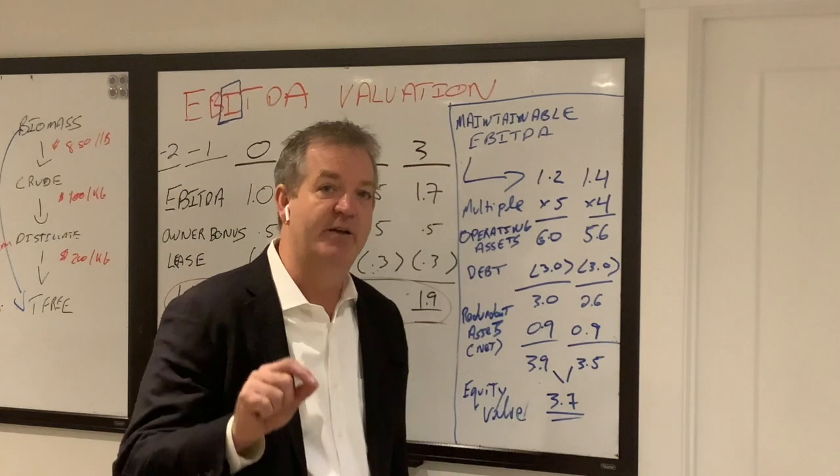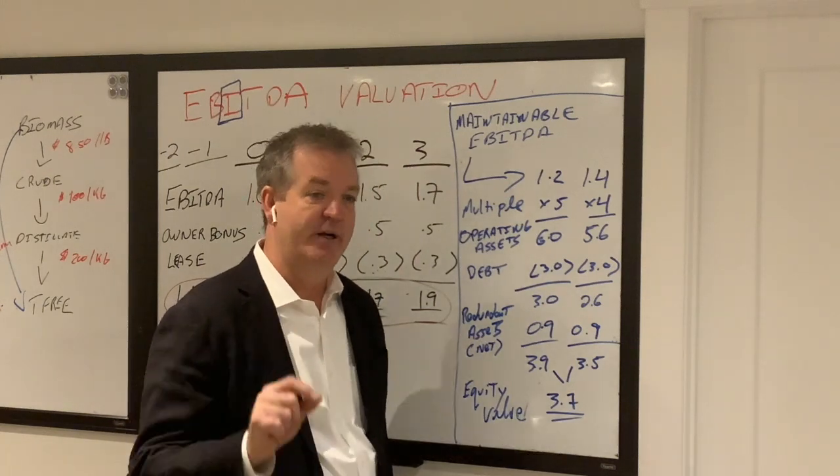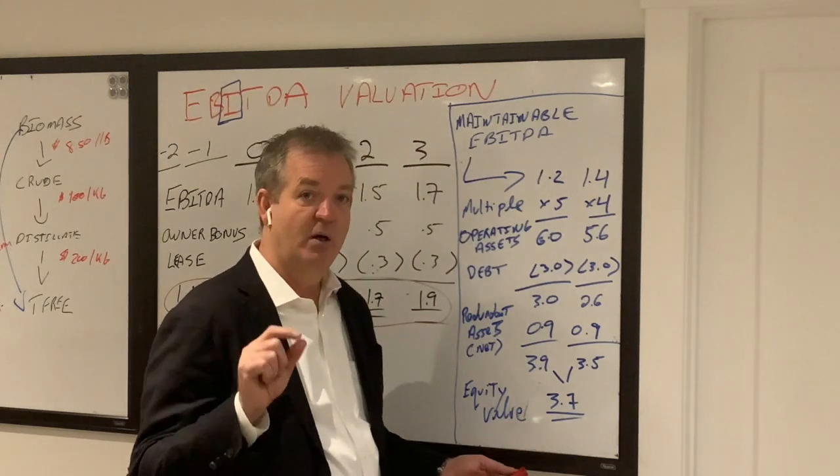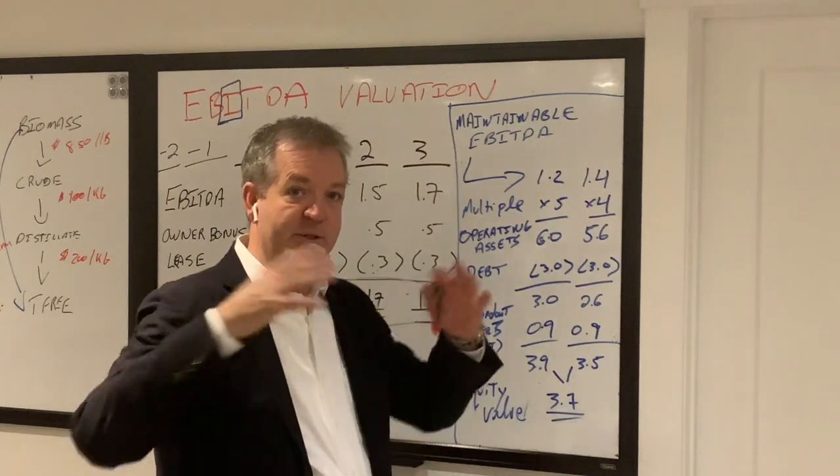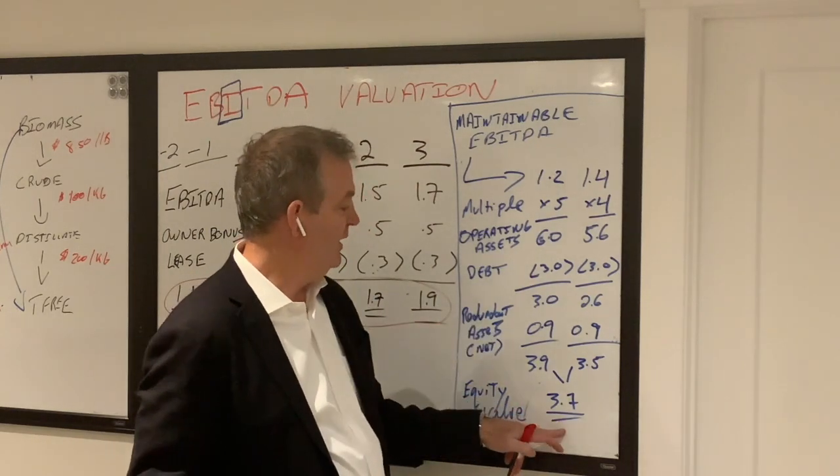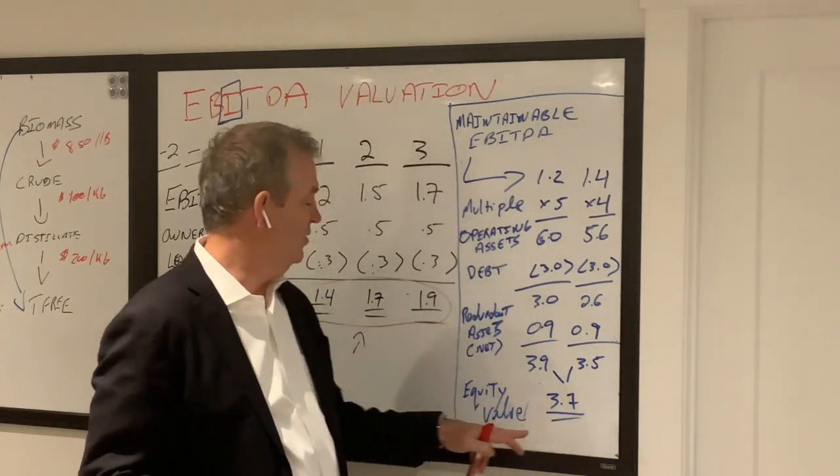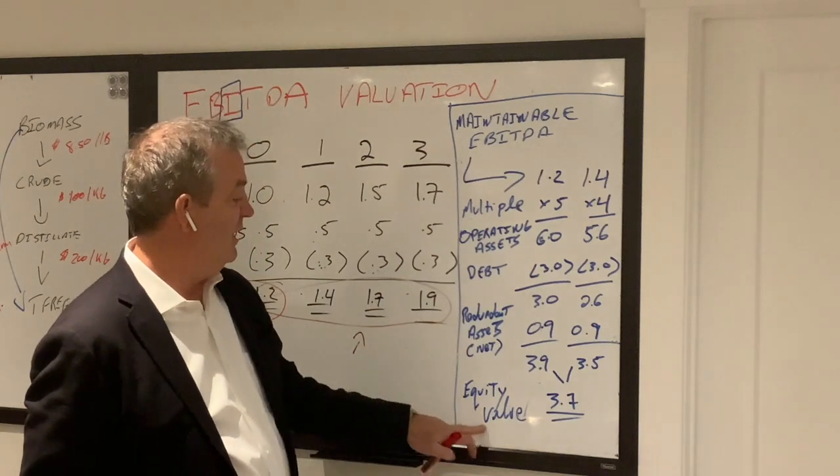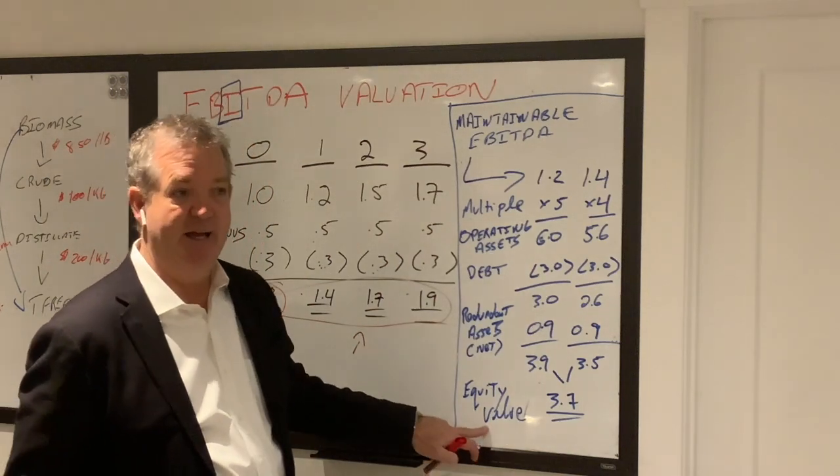And that is the value of the equity, the shares of your business. What the valuers would call on block, which means all the shares of your business. Midpoint here is 3.7 million dollars. And that's the equity valuation, as I said.